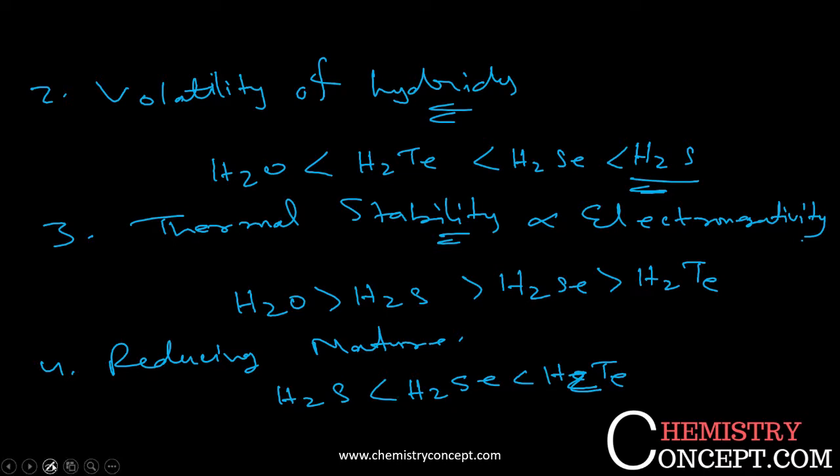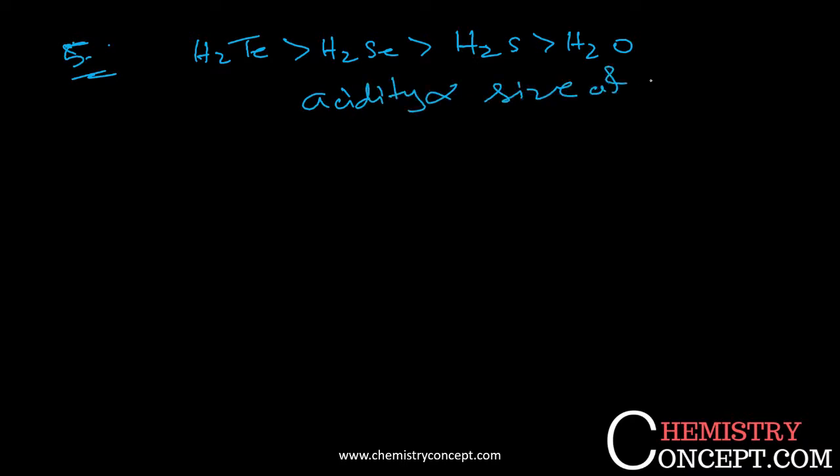For the fifth property, we'll talk about acidic strength. Which one is the most acidic? H2Te is the most acidic, then H2Se, then H2S, then H2O. This is the acidic strength. As the size of the central atom increases, the acidic strength also increases. This rule is for hydroacids. For oxoacids, I already talked about in my last videos, so for that you should check my previous videos.